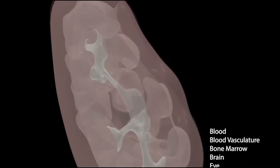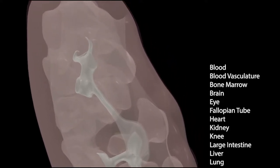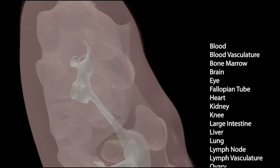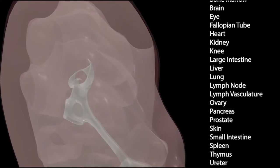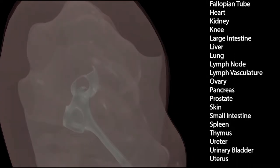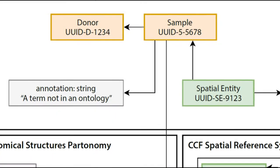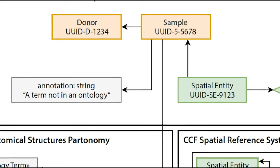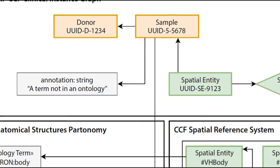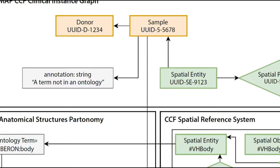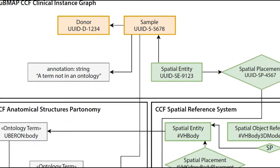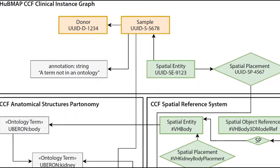As of May 2022, the CCF HRA's three ontologies have been fully implemented for several organs, including the kidney, which is shown here. This enables the RUI and EUI to capture who, what, and where information for every tissue data sample.